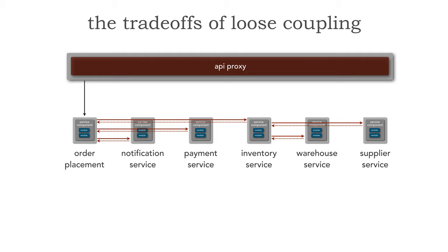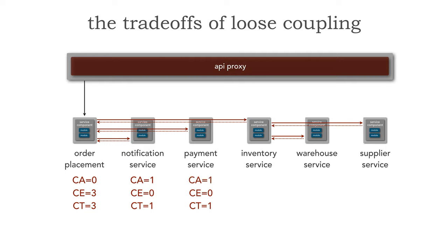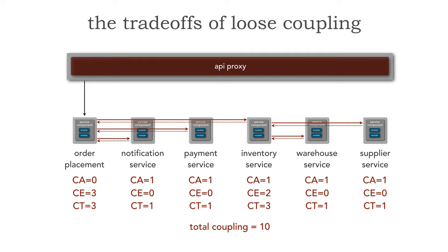If we analyze this simple but real example, we see a lot of levels of coupling. The order placement CA — knowing that CA is afferent or incoming, CE is efferent or outgoing, and CT is the total coupling level — has no incoming between services, but three outgoing. Notification service has one incoming, no outgoing, total of one. Payment has one incoming, no outgoing, total of one. Inventory service has one incoming and two outgoing, total of three. Warehouse has one for a total of one, and supplier has one. Just between these six services, there is a total coupling level of 10.